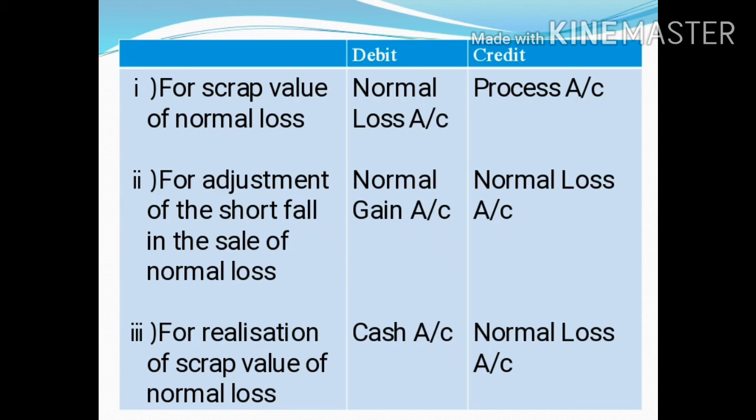So, we have three circumstances in normal loss related to the journal entries discussed. The theoretical aspects of normal process loss are now clear. Thank you all.